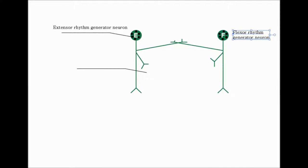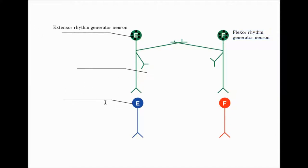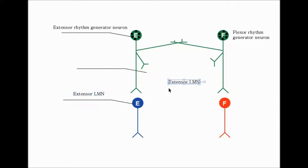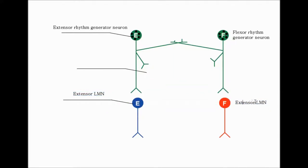The next neurons we need are the lower motor neurons. These are the lower motor neurons that have a direct connection to the muscle. This is the extensor lower motor neuron, and the one in red is the flexor lower motor neuron.